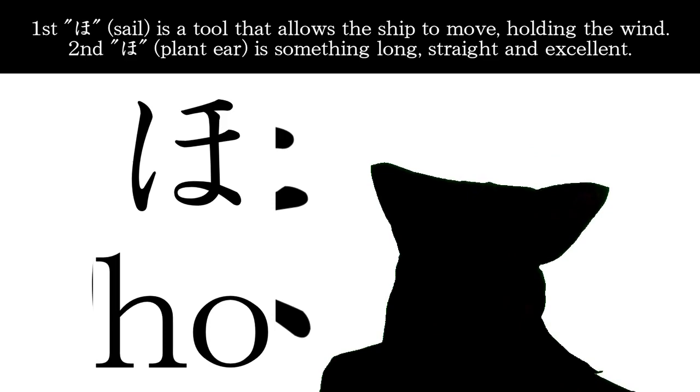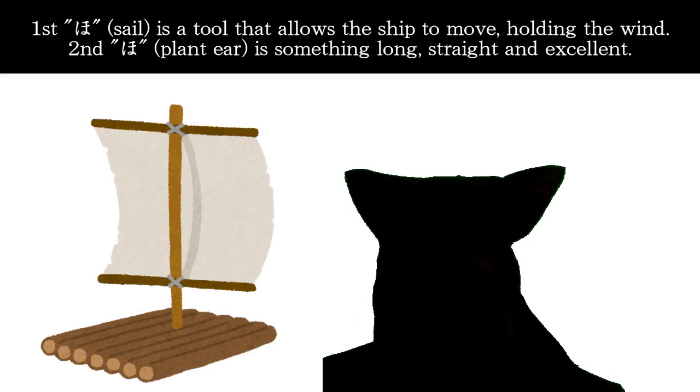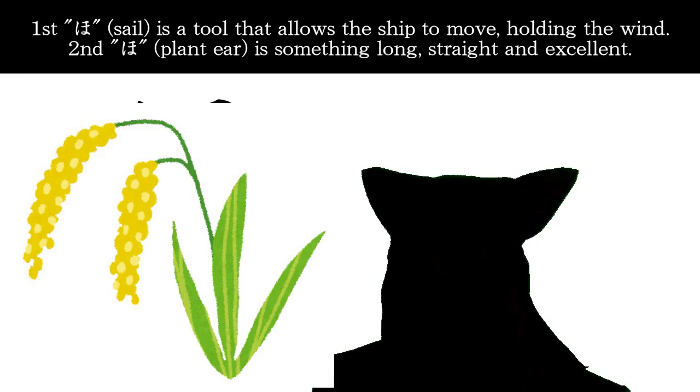The first meaning of ho, which is sail, is a tool that allows the ship to move, holding the wind. The second meaning of ho, which is plant ear, is something long, straight, and excellent.